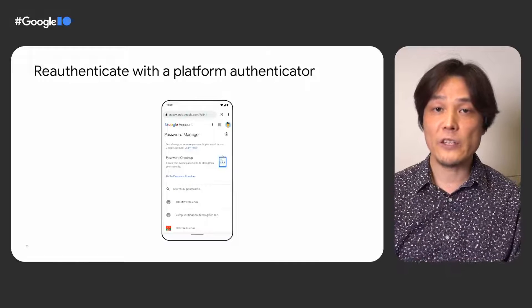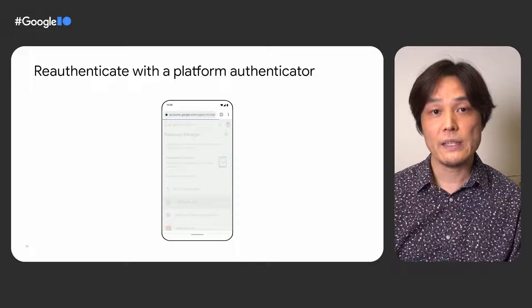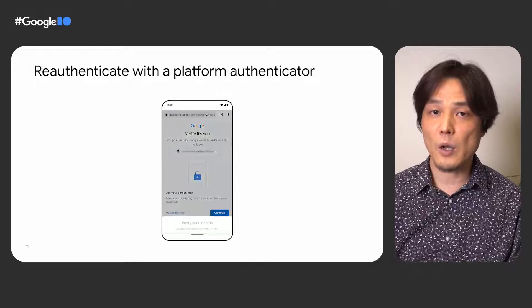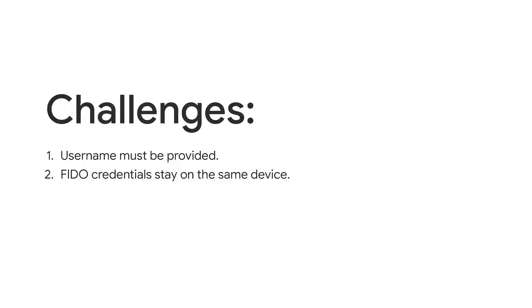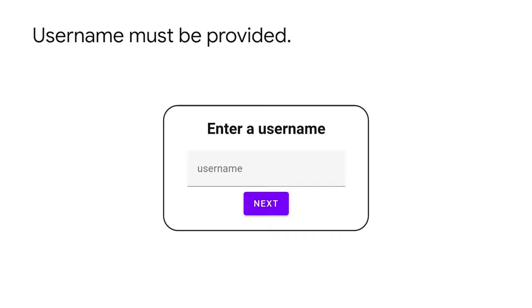Since platform authenticators can verify user identity quickly, it's suitable for sensitive operations such as making a payment or changing a password. Platform authenticators sound like a great solution to enable passwordless login, but there are a couple of challenges. In the current FIDO implementation, to authenticate a user, you need a list of credential IDs, which requires that you know who the user is first. This leads to a sub-optimal experience where we need to ask the user to provide their username before authenticating.